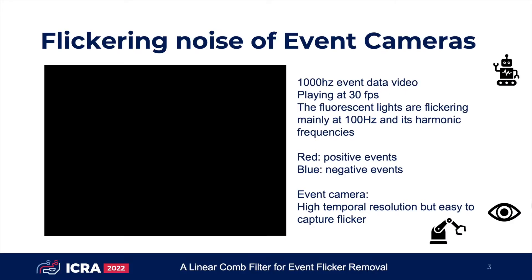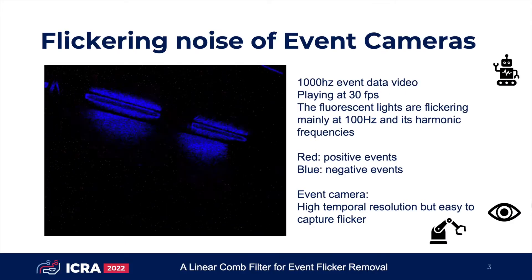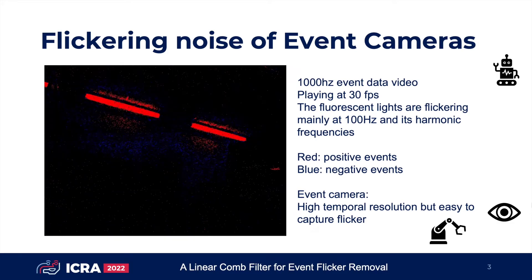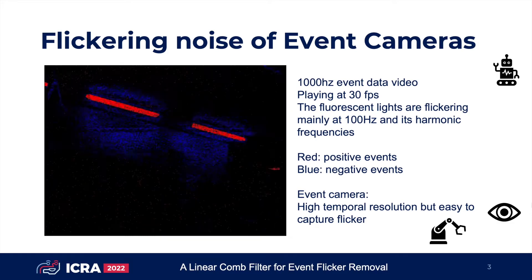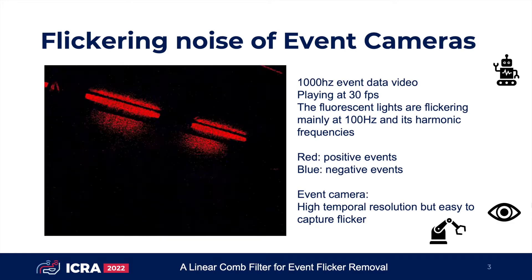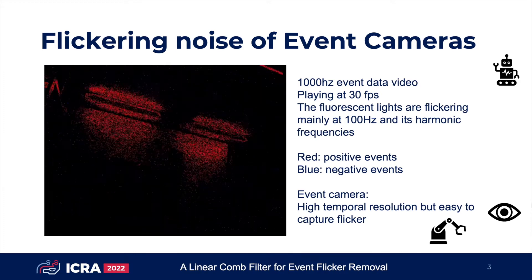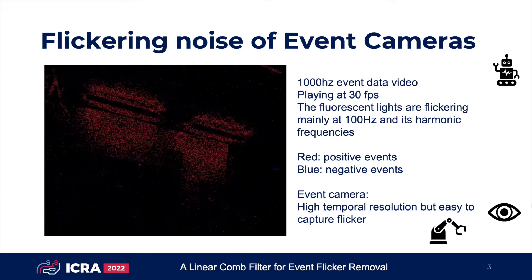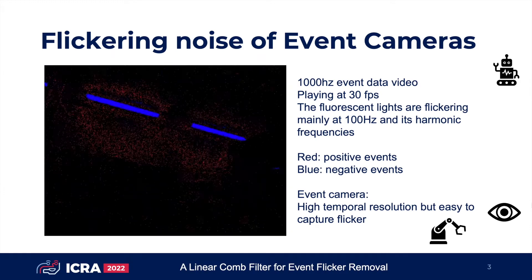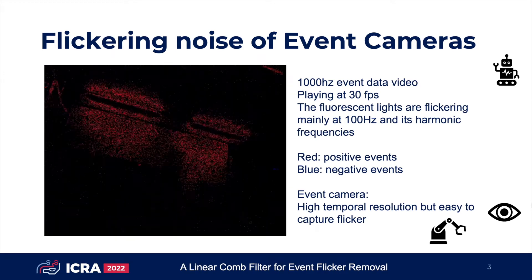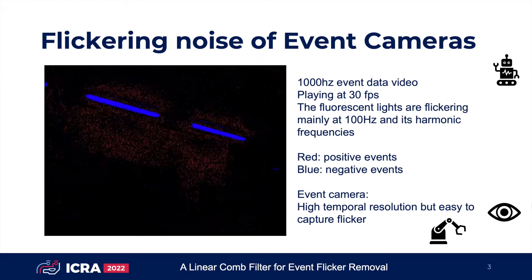For example, the fluorescent lights appear to be of a constant brightness for a typical frame-based camera and human eyes, but the light triggers a large number of events in event cameras.